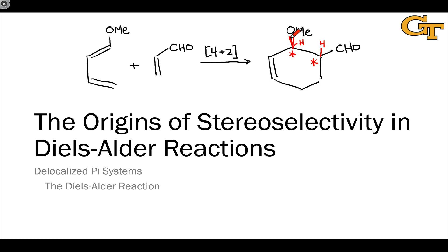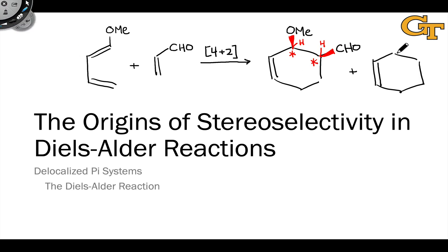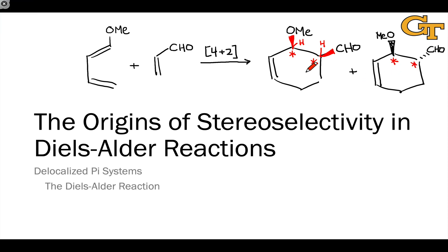In one of the possible diastereomeric products, the methoxy group is up and the aldehyde group is also up, so the methoxy and aldehyde groups have a cis relationship in the newly established six-membered ring. In the other possible diastereomer, the methoxy group is still pointed toward us, but the aldehyde and methoxy groups have a trans relationship with the CHO group behind the plane of the screen. Because these two possible products are diastereomers, we should expect them to form in unequal amounts, with one favored over the other.